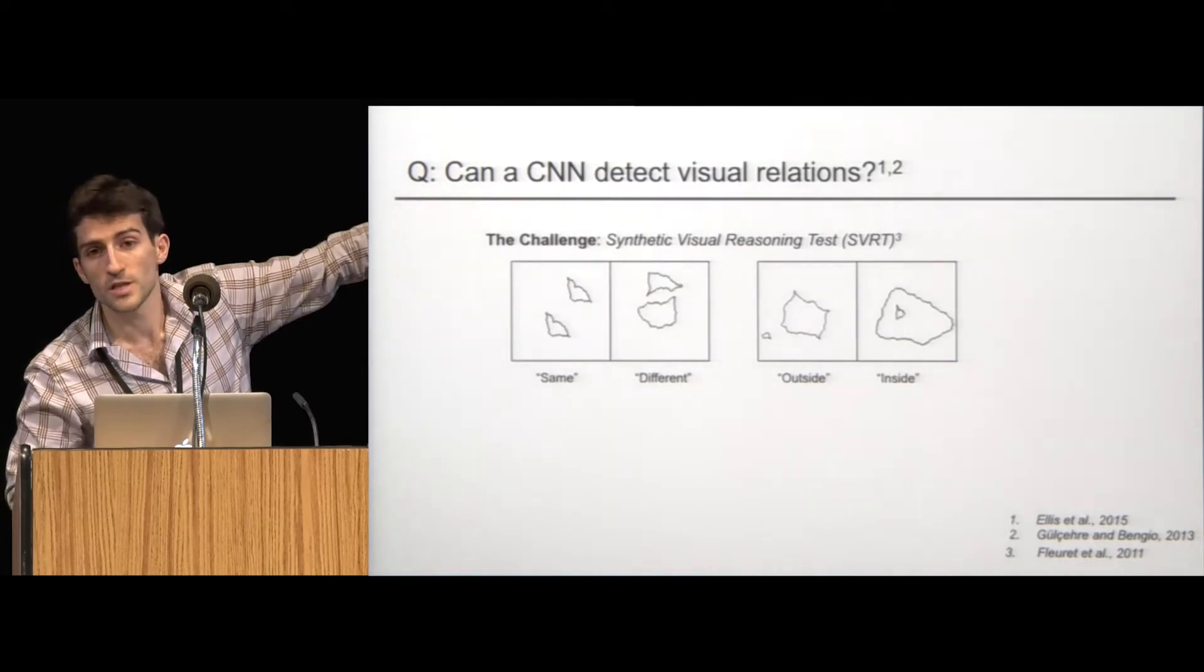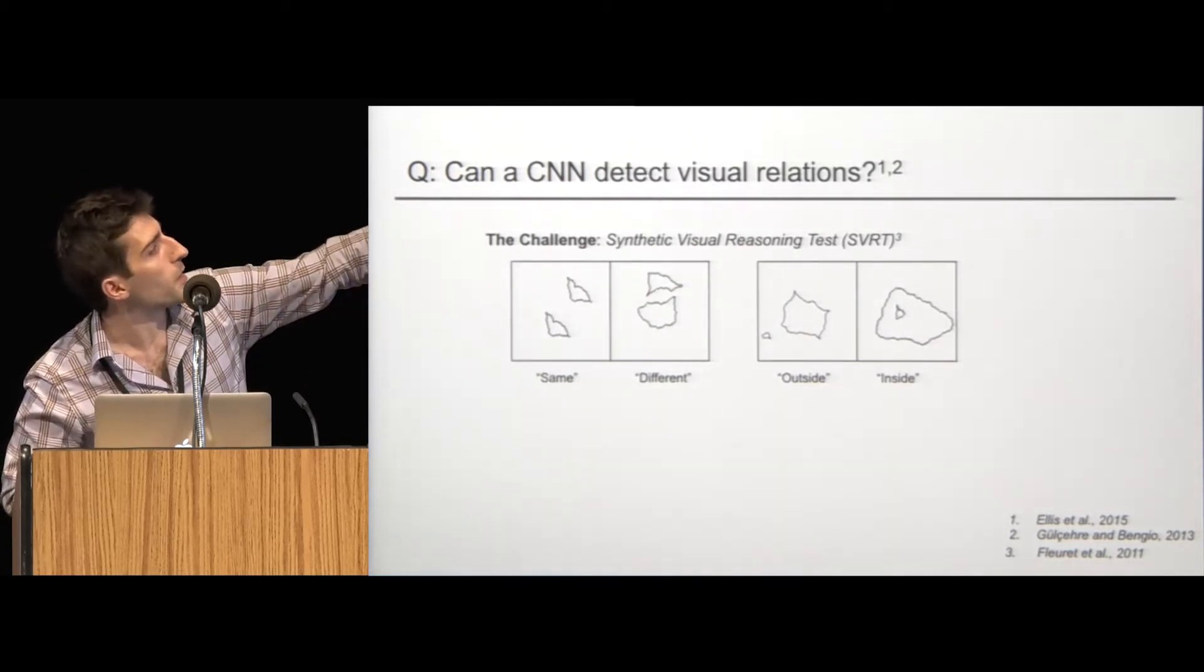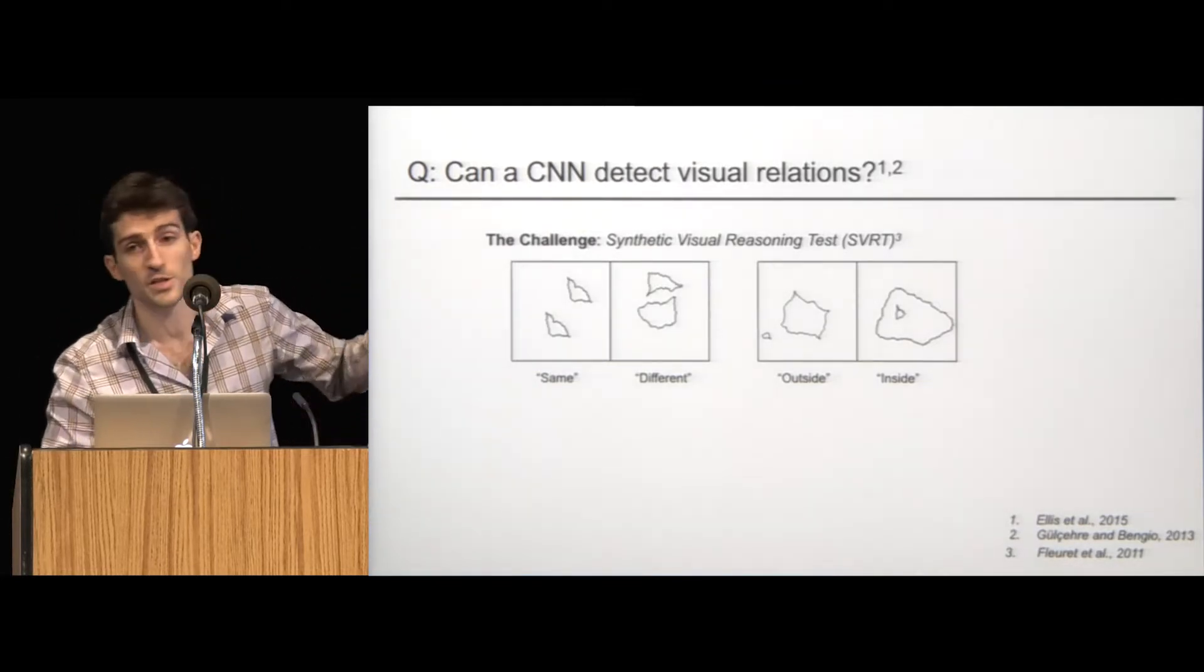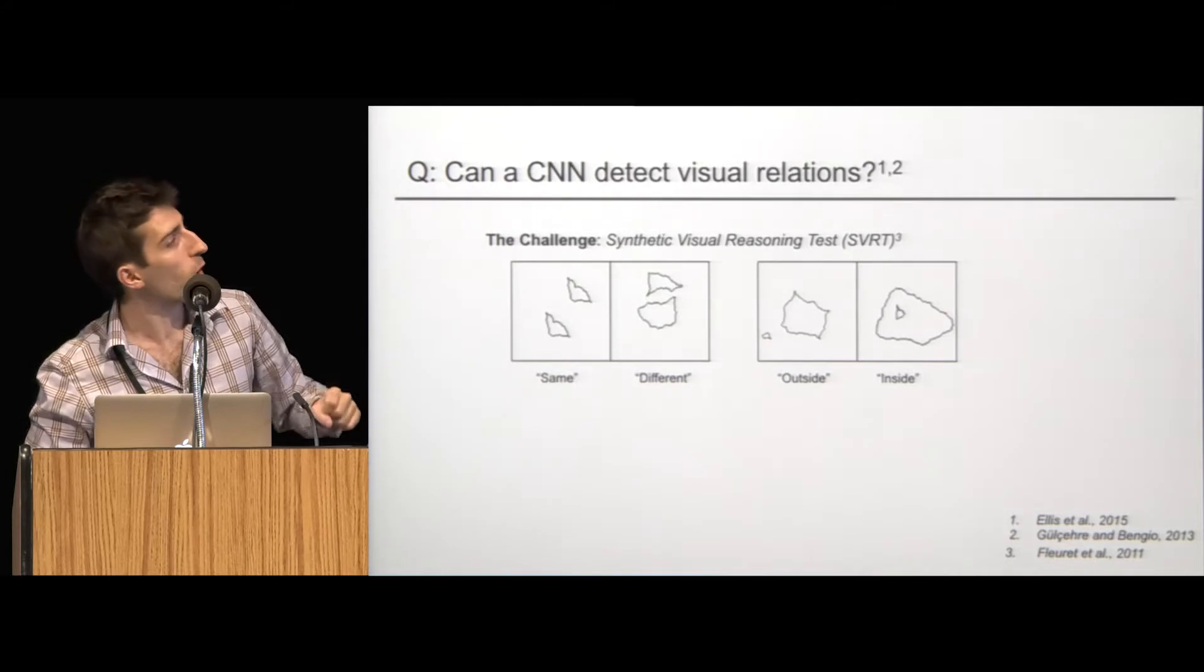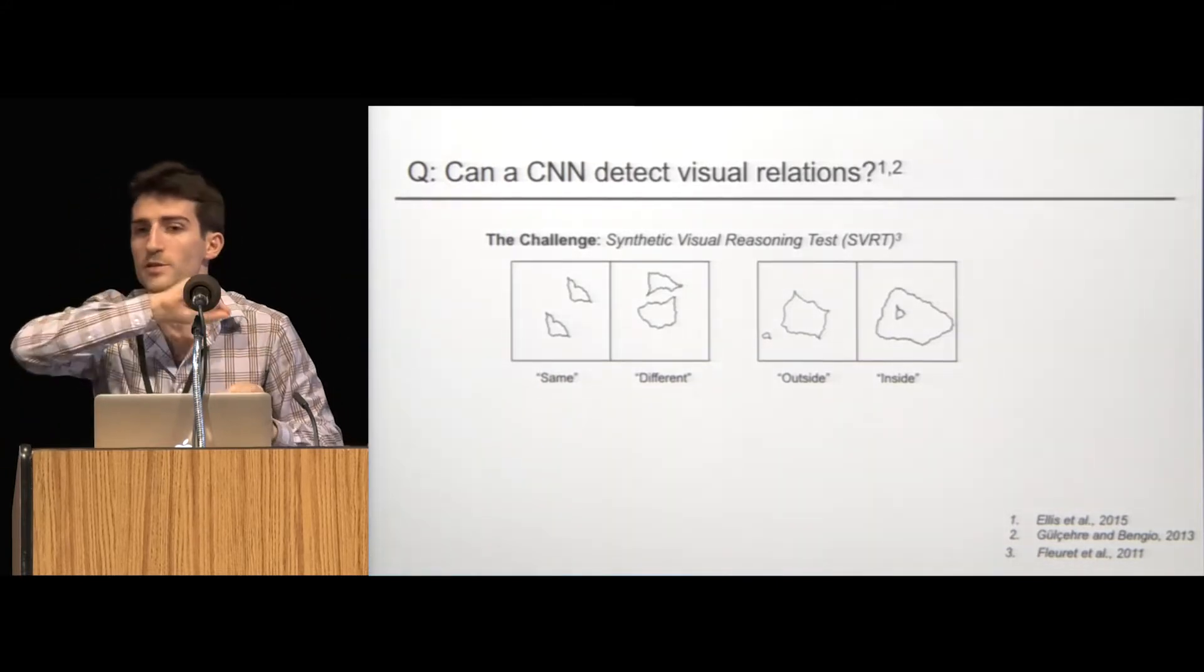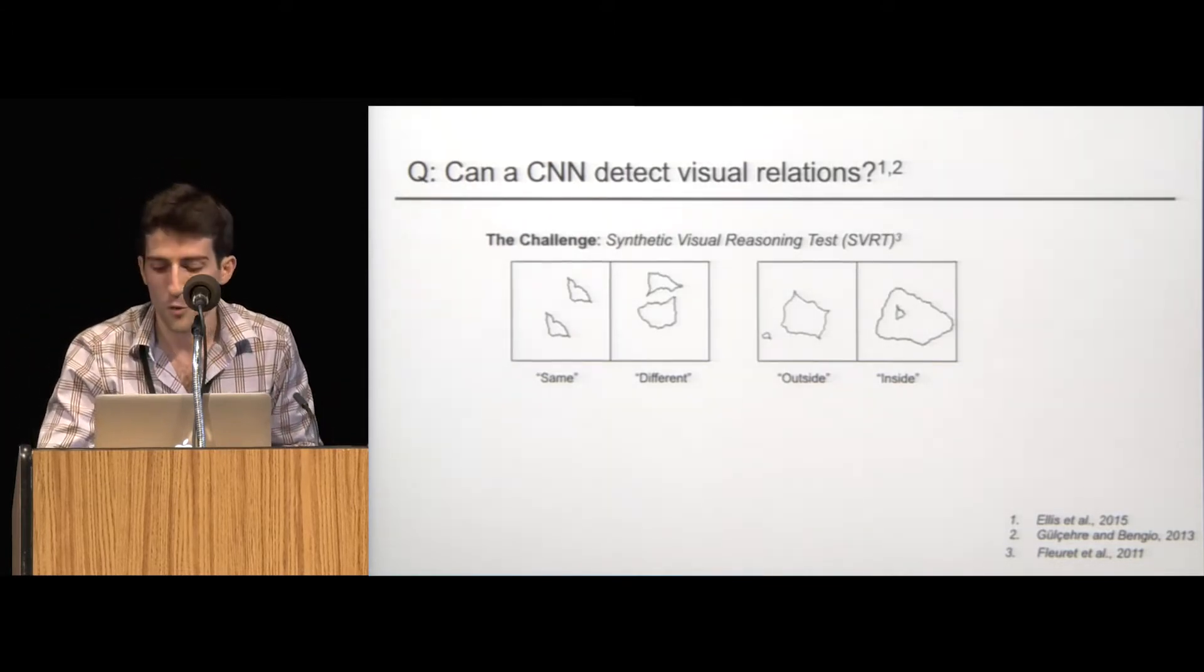And each one of these problems has one class differing from another by its possessing a certain rule. So for example, here's two stimuli from one question. One image has two items that are the same as opposed to the other class in which the items are different. And another problem, problem number four, you'll see that the two images differ because there are two curves, one is outside the other and one is inside the other.